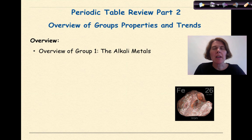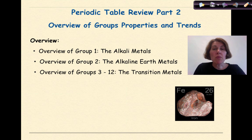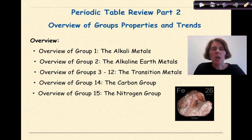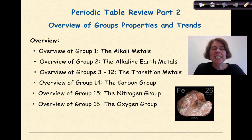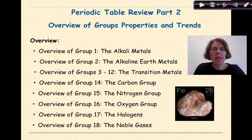Specifically, we're going to be looking at Group 1, the alkali metals; Group 2, the alkaline earth metals; Groups 3 through 12, which we know as the transition metals; Group 14, the carbon group; Group 15, the nitrogen group; Group 16, the oxygen group; Group 17, the halogens; and finally Group 18, the noble gases.